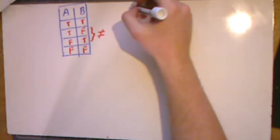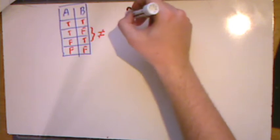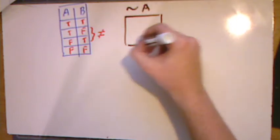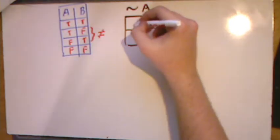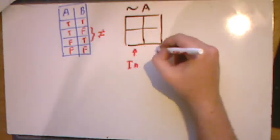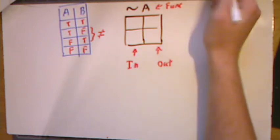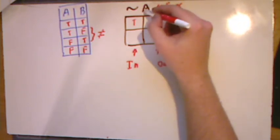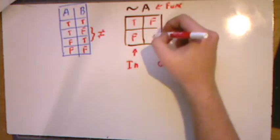Negation is typically a solo act, so we set up the negation as tilde-A. Since it's a single input, the combination is either true or false. Think of this as a function: if you plug in true, you get out false. If you plug in false, it negates it and you get true. The left side is your input, the right side is your output.